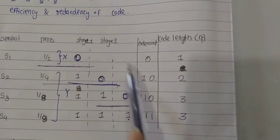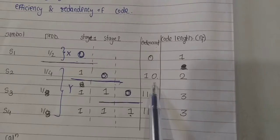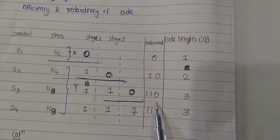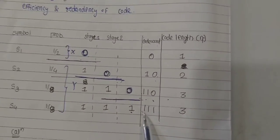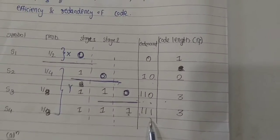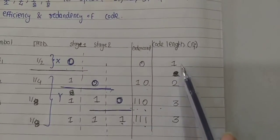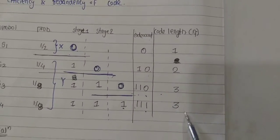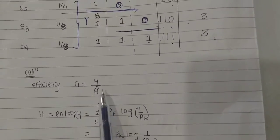The resulting code words are: s1 = 0, s2 = 10, s3 = 110, s4 = 111. Their respective code lengths are 1, 2, 3, and 3.